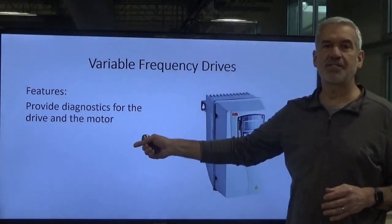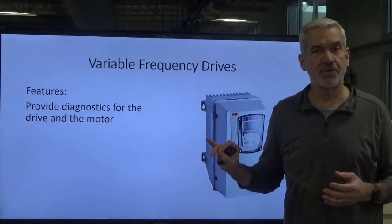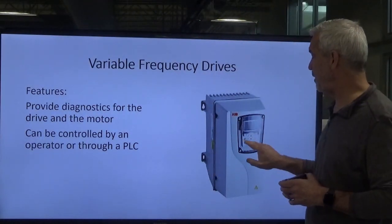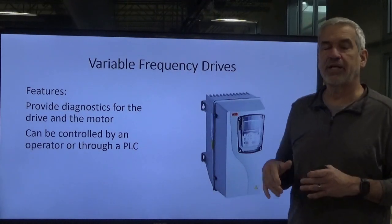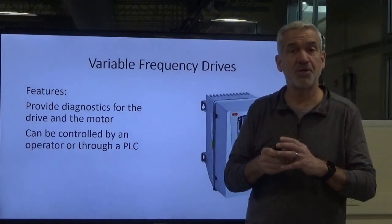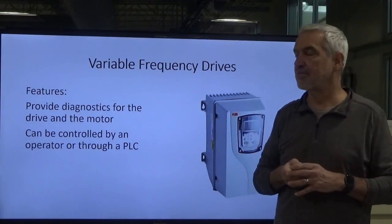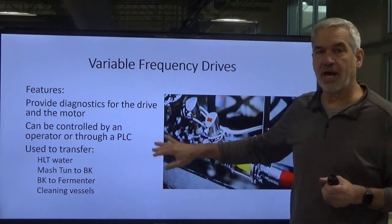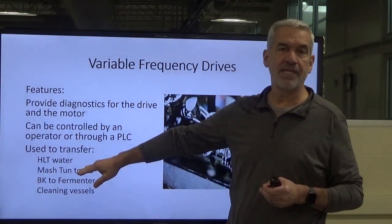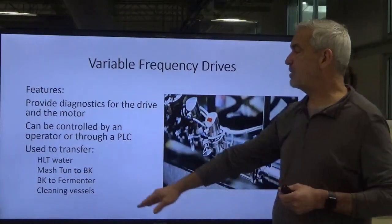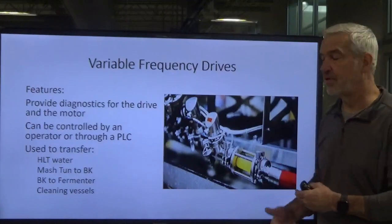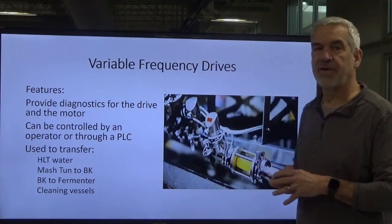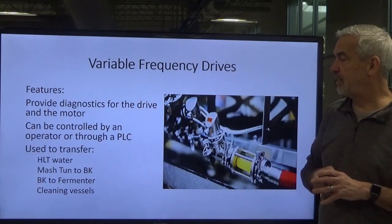The features of some drives give us diagnostics for the drive itself and the motor. It can be controlled by the operator using push buttons on the keypad, or by a PLC, which is a programmable logic controller, basically an industrial computer that controls automation in factories. We use them primarily in brewing operations for transfer of water from the HLT to the mash tun, from the mash tun to the boil kettle, from the boil kettle to the fermenter. We also use it for cleaning, running our CIP, our flushes with caustic and acid.